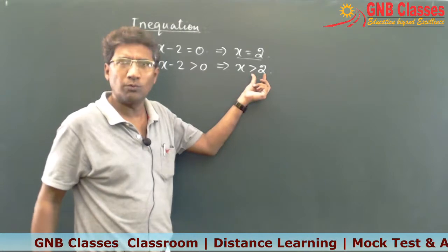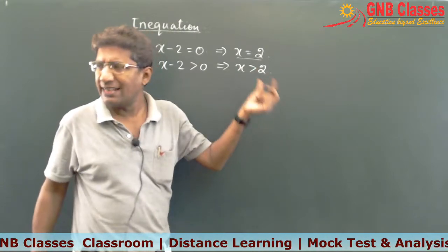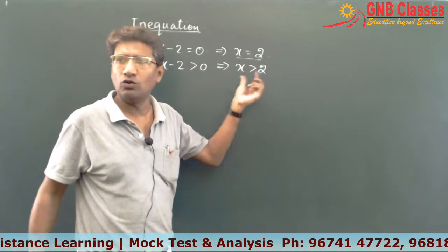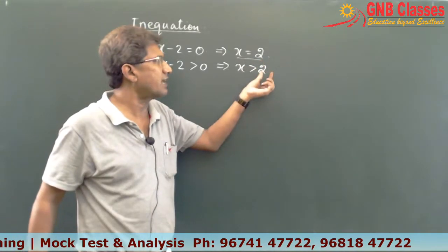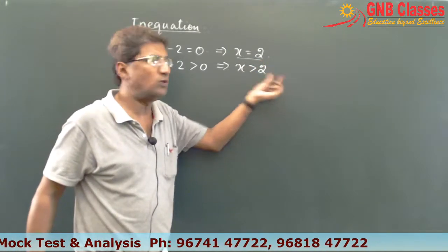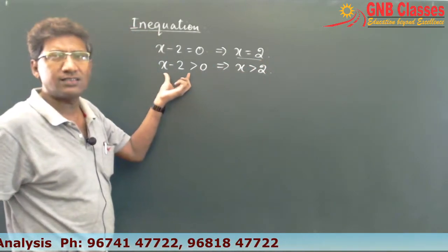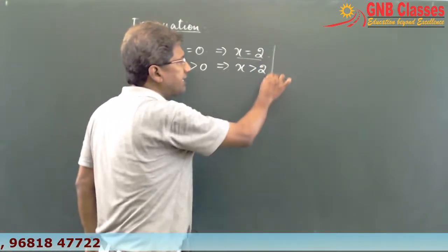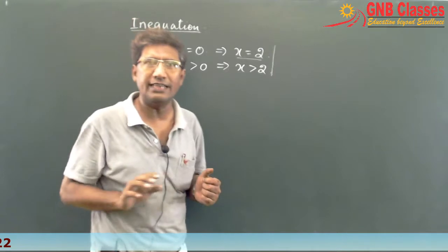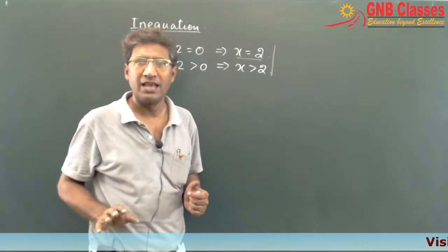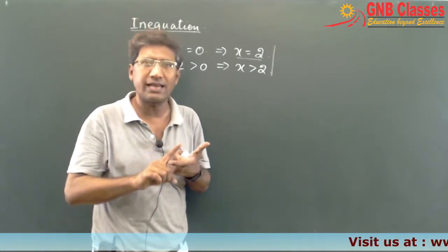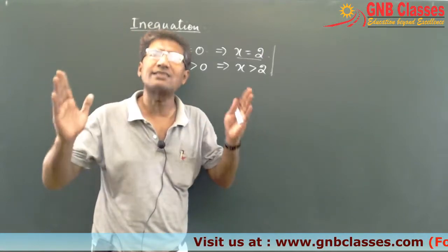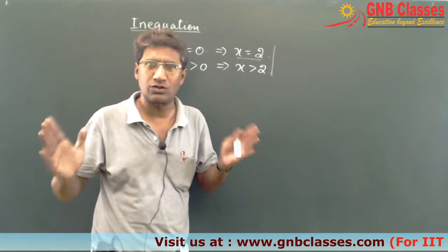In an inequation, if x is greater than 2, then any value greater than 2 will satisfy this inequation. So that is the difference between an equation and an inequation — in an equation we always get a particular value, while in an inequation we always get a set of values.